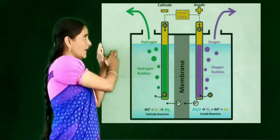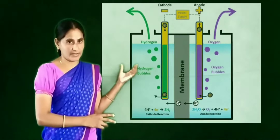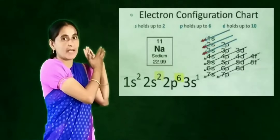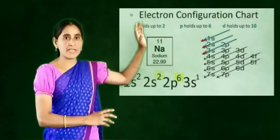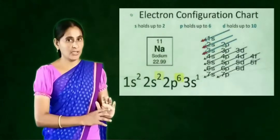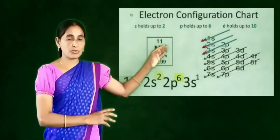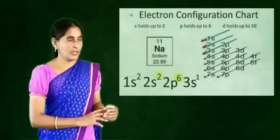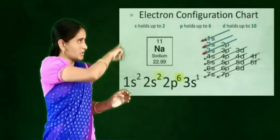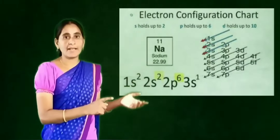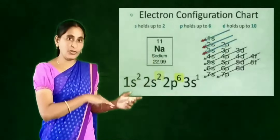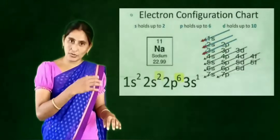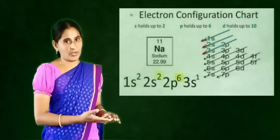In the formation of ionic bond in NaCl, first we will go through the cation formation. Sodium has atomic number 11 and its configuration is 1s2, 2s2, 2p6, 3s1. The 1s2 is in K shell, 2s2 and 2p6 are in L shell, and 3s1 is in M shell. Sodium has only one electron in its outermost orbit, so it is ready to lose one electron to become equal to neon in configuration and to get stability.